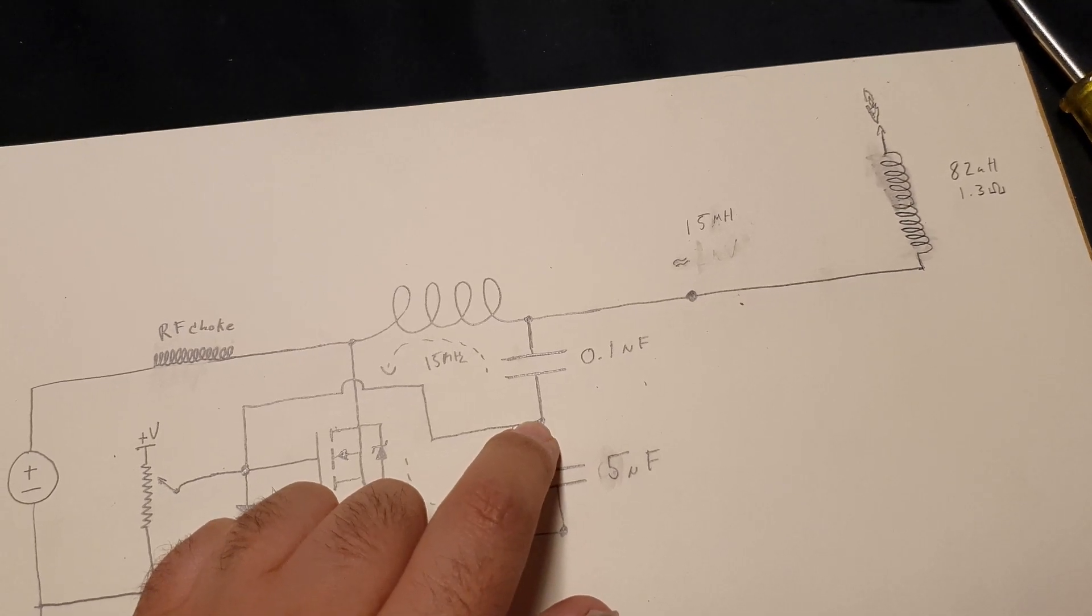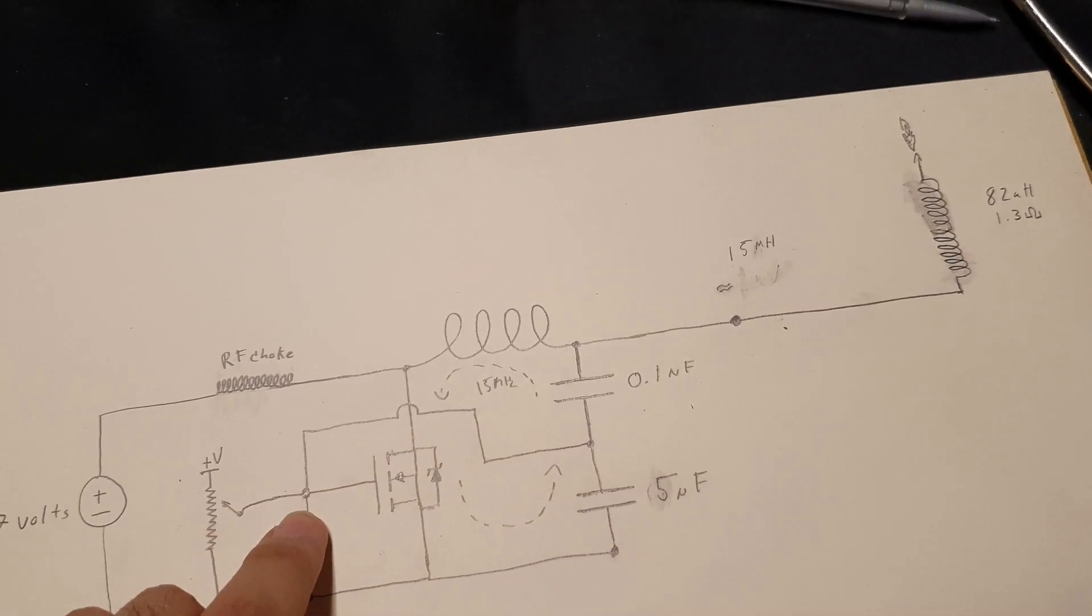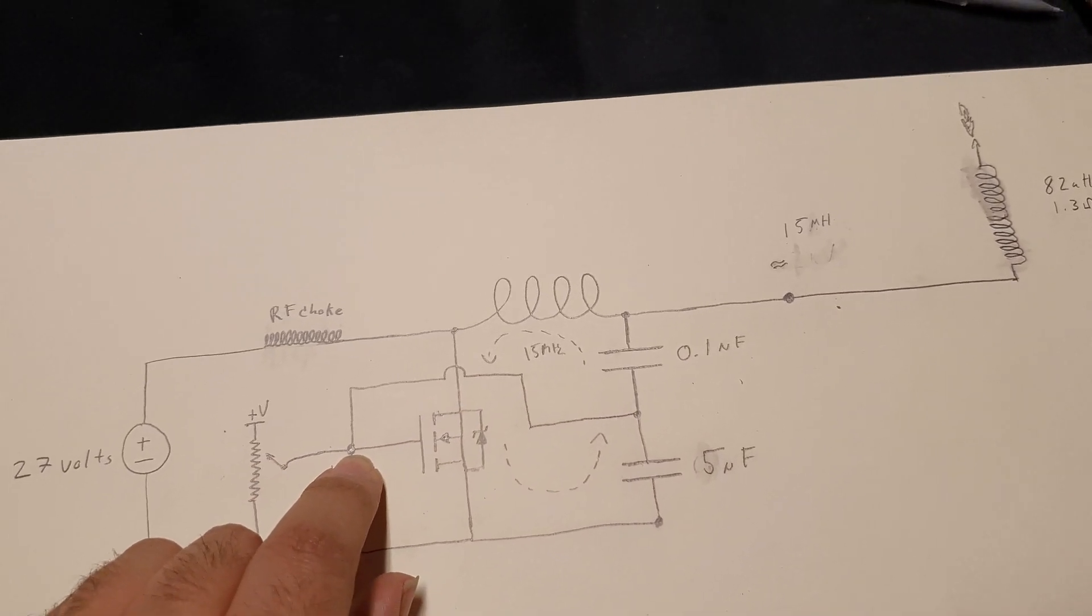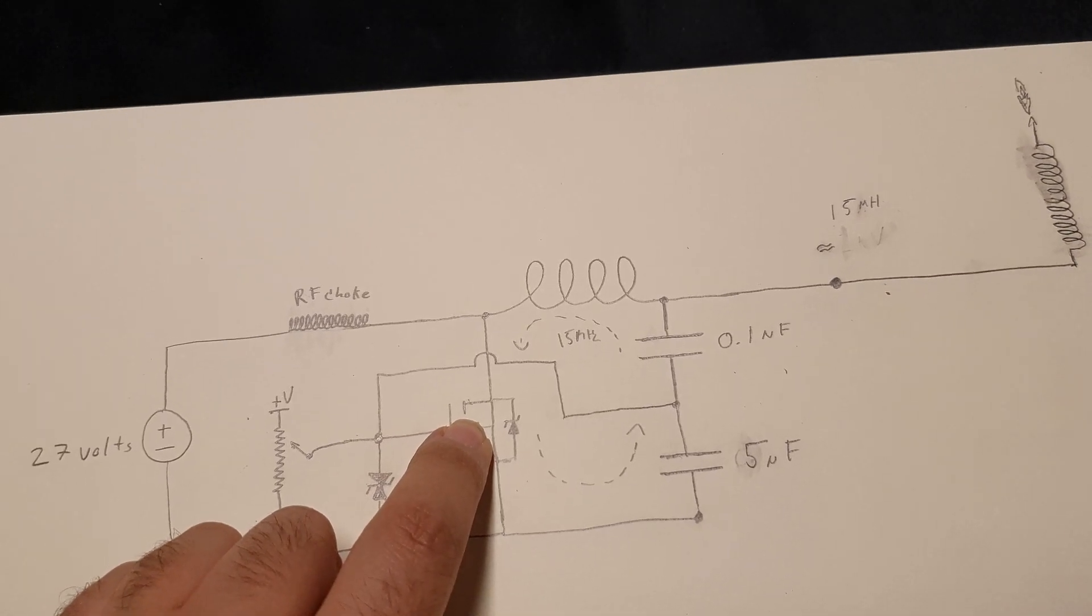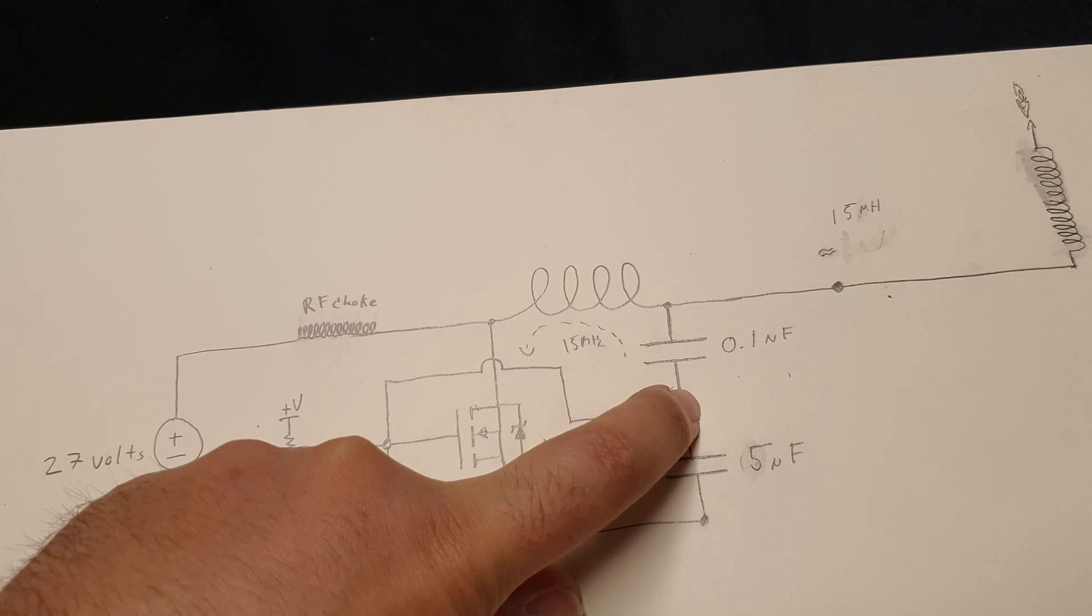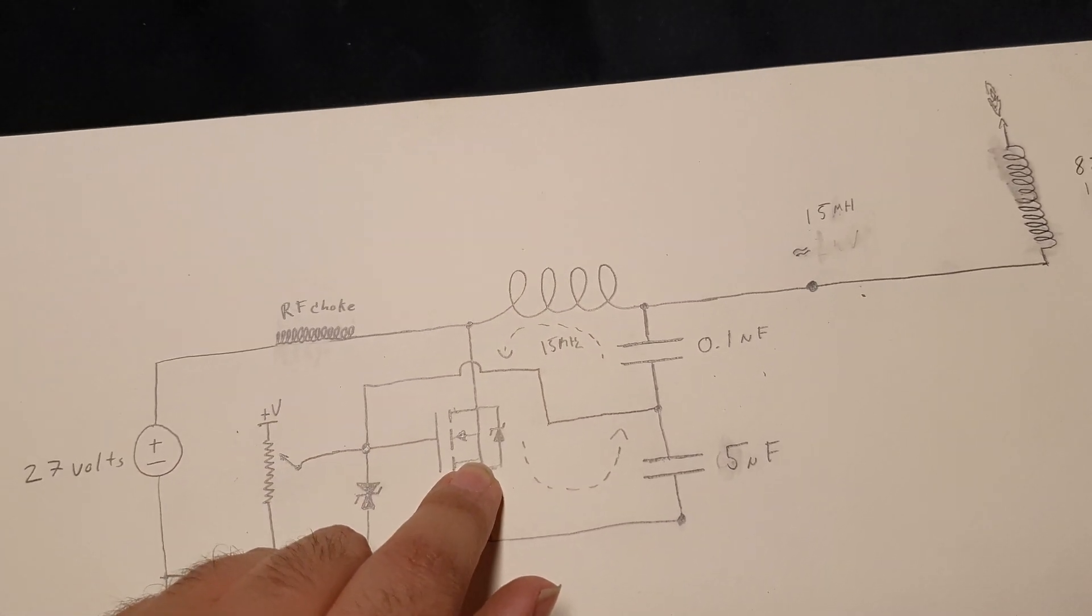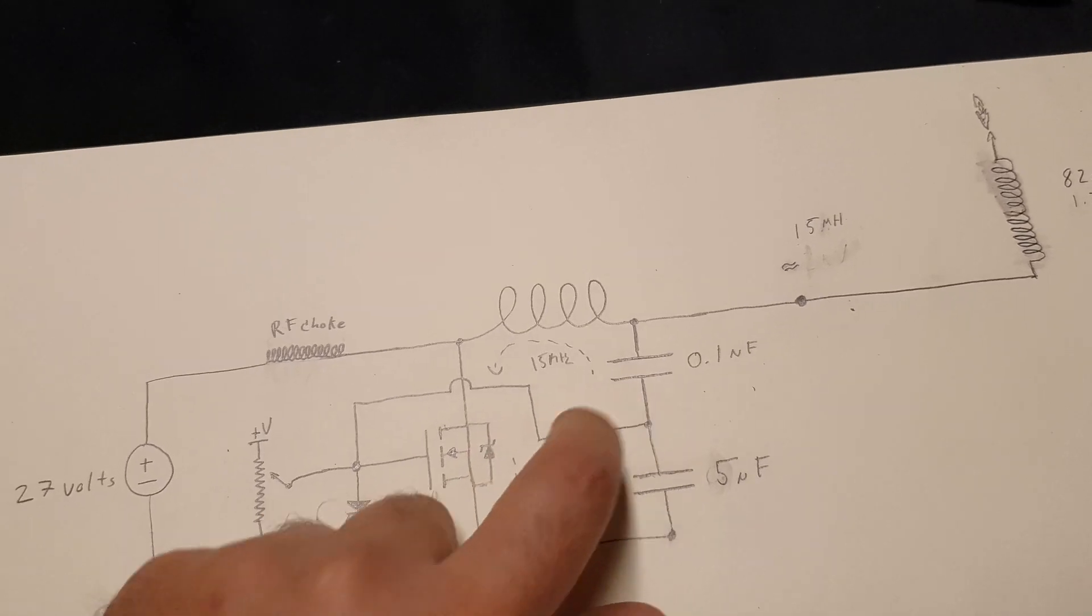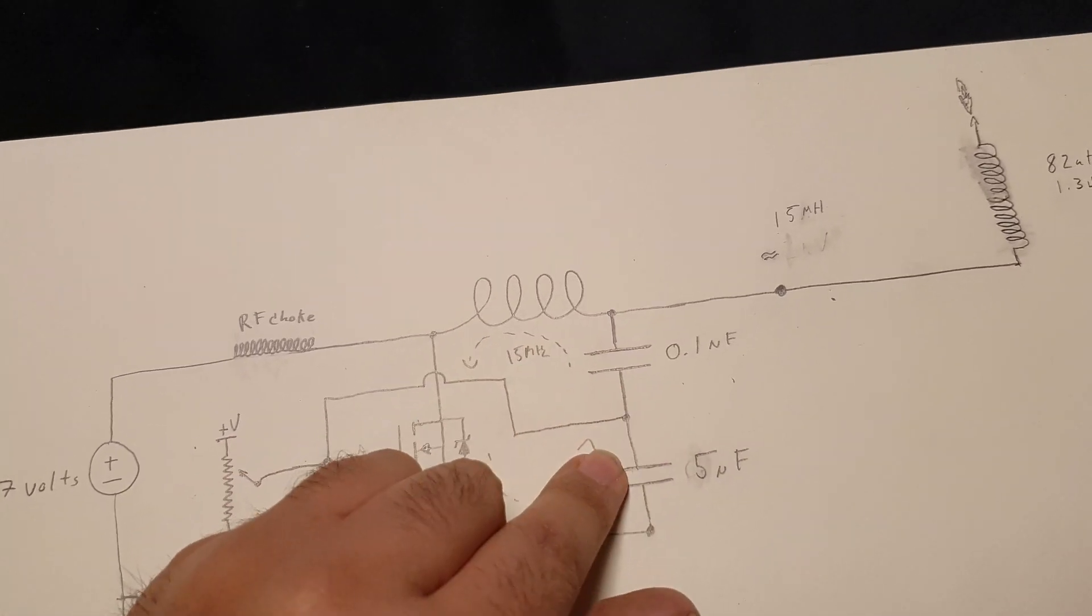Some of that potential across this capacitor divider network is sent back into the gate of the power transistor, which then discharges the capacitors through our coil. And that will reverse the potential on the gate and shut off the transistor, and then the cycle will start again.